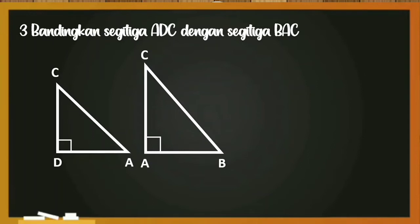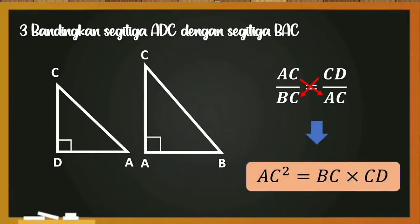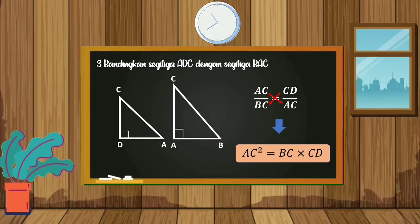Dan yang terakhir, kita akan bandingkan segitiga ADC dengan segitiga BAC. Perbandingan sisi-sisi yang bersesuaian, AC per BC sama dengan CD per AC. Dan ketika kita kali silang, maka didapatkan AC kuadrat sama dengan BC dikali CD.